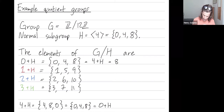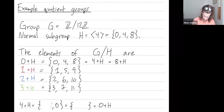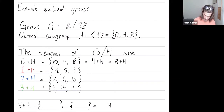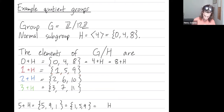And these are also the same as the coset 8+H. Let's verify with 5+H: adding 5 to each element gives 5, 9, and 13 — but mod 12 that's 1. Reordering, that's {1, 5, 9}, which is just the coset 1+H. So these cosets might have multiple names, but they're still the same coset.